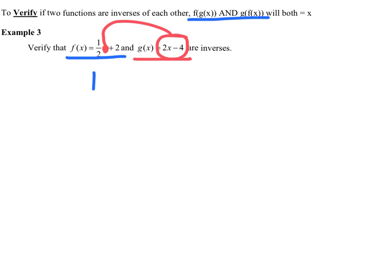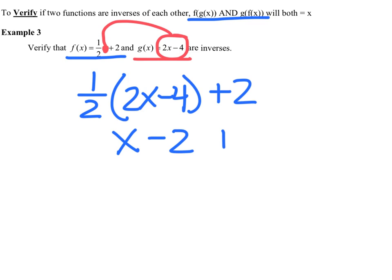So this will be our f of x, and this will be our g of x. It means we're going to take 2x - 4 and put it in place of this x. So I'm going to have 1/2, and then instead of x, I'm going to have 2x - 4, and then I still have my plus 2. So half of 2x would be x. 1/2 of -4 would be -2, and then I have a +2 out here. And x - 2 + 2 equals x. So that equals x.